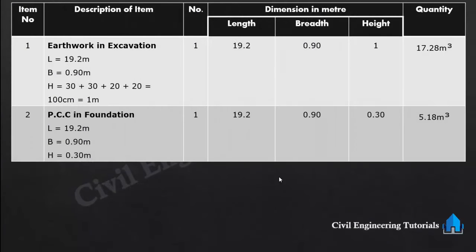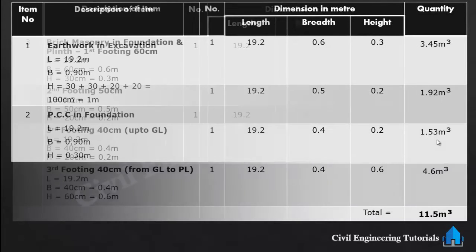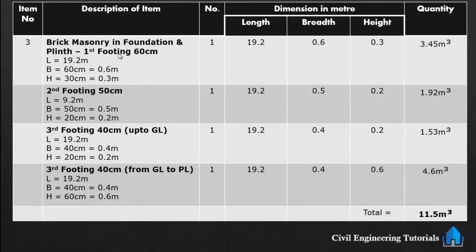From the previous video: Item 1 — earthwork in excavation: 17.28 cubic meter. Item 2 — PCC: 18.3 meter. Item 3 — brick masonry in foundation and plinth: first footing 3.45 m³, second footing 1.92 m³, third footing 1.53 m³, and from GL to plinth level 4.6 m³, giving a total of 11.5 cubic meter.